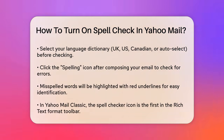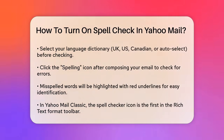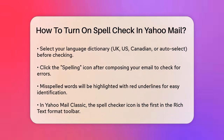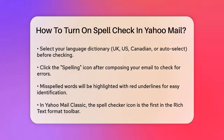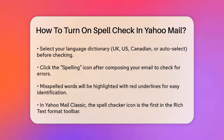In the Yahoo Mail Classic interface, the process is a bit different. For rich text format, the spellchecker icon is the first one in the toolbar. Clicking it will underline spelling errors one by one, and suggestions will appear above the message box. In plain text format, the spellcheck button is next to save as draft in the top toolbar. Here, misspelt words are selected rather than underlined, and you can correct them sequentially.